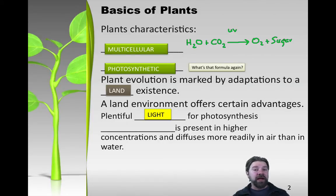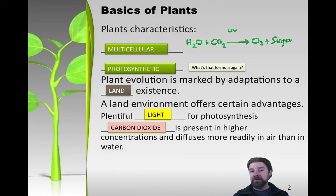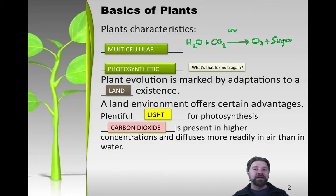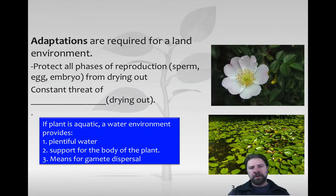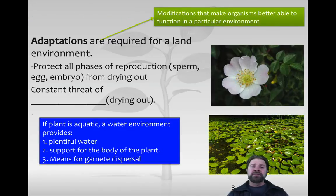Second, the carbon dioxide that plants need to survive is much more present in the atmosphere than it is dissolved in water, so plants can take advantage of all the CO2 in the atmosphere. Some adaptations are required for a land environment. An adaptation is a modification that makes organisms better able to function in their particular environment - in this case, a terrestrial one.